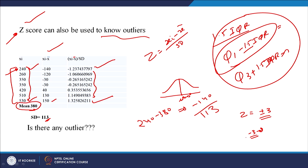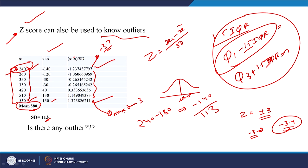When I say more than minus 3, it means towards the negative side. So if Z is minus 3.4, that point would be an outlier. For example, if Z is minus 3.7 it would be an outlier. Similarly, any value for which Z is more than plus 3 would also be an outlier. So all those points for which Z is less than minus 3 or greater than plus 3 are outliers — this is the best method of finding outliers.